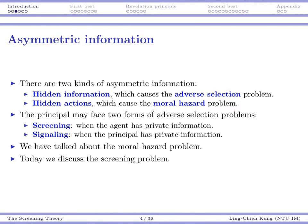On the other hand, it may be the principal that has some private information — in that case, we say it's a signaling problem. For example, in a manufacturer-retailer relationship, sometimes the manufacturer knows more about its product quality, since it knows the production process and quality of raw materials. But because the principal has no way to guarantee the quality to the retailer, the principal faces a signaling problem about how to convey quality information to the retailer.